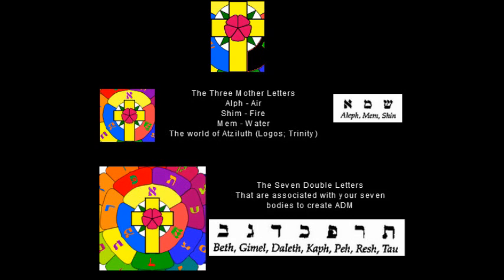Expanding further from the three mother letters, you see the seven double letters arranged around them: Beth, Gimel, Daleth, Kaph, Peth, Resh, and Tav — all seven of them. These seven double letters are associated with your seven bodies. So we go from Atziluth — the world of the trinity — to the seven bodies that need to be conquered.